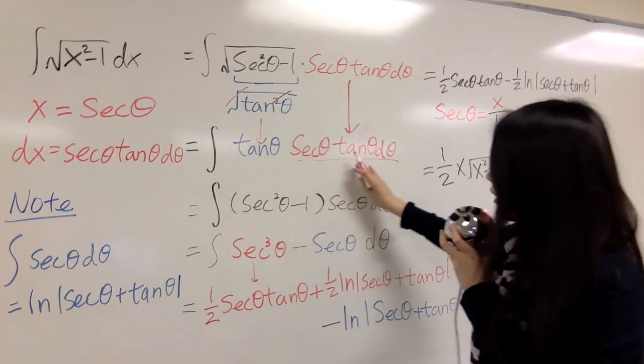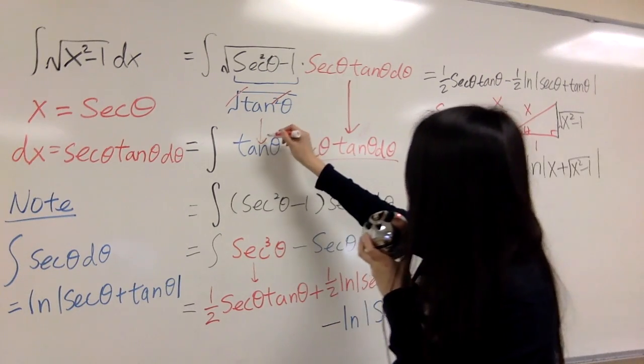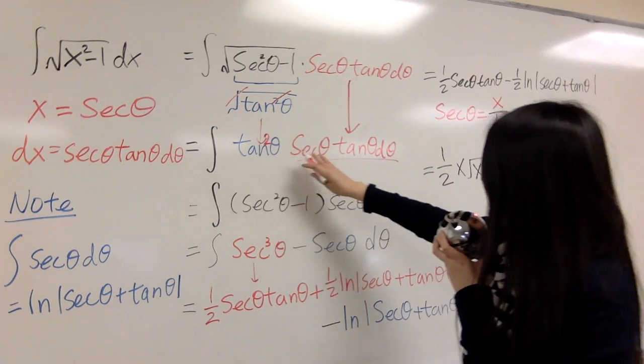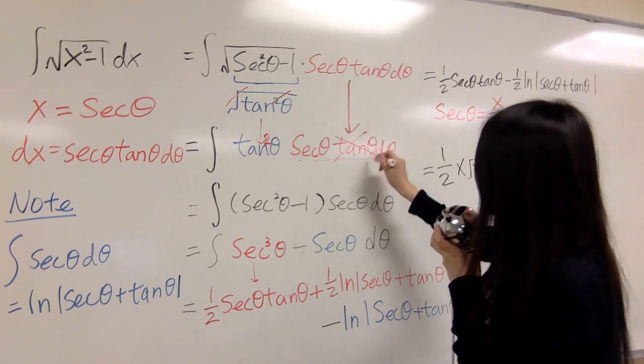Now you have two tangent, you can combine them to tangent squared theta. This one cancel.